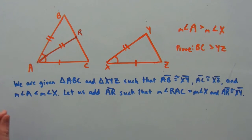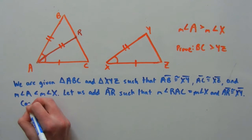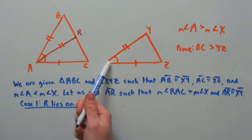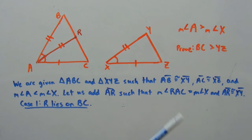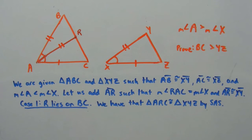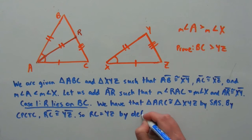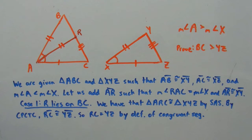There are going to be two cases for this. Our first case is that R falls on segment BC, and that's what I've drawn here. Right away, we have side-angle-side congruent to side-angle-side. By the side-angle-side postulate, triangle ARC is congruent to triangle XYZ. Since those two triangles are congruent, by CPCTC — corresponding parts of congruent triangles are congruent — RC is congruent to YZ, which means the length RC is equivalent to the length YZ, by the definition of congruent segments.